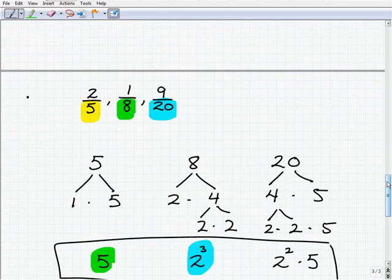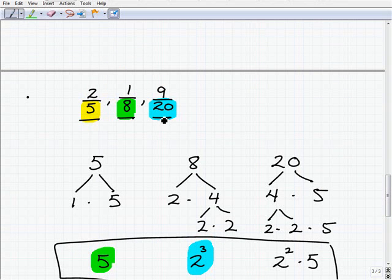Let's go back here. So if I ask you 5, 8, and 20, what's the lowest number that all of them divide into, all three of those numbers, in fact it would be 40. Our LCD is 40.